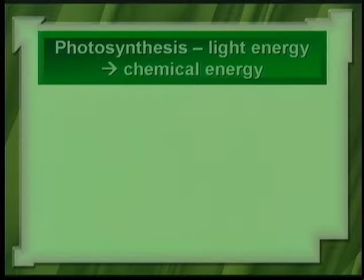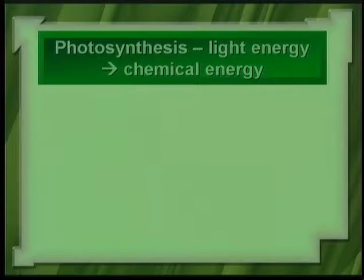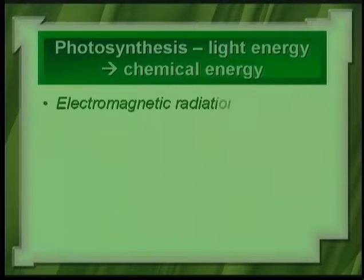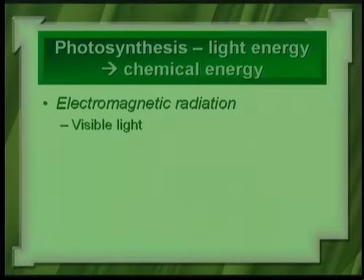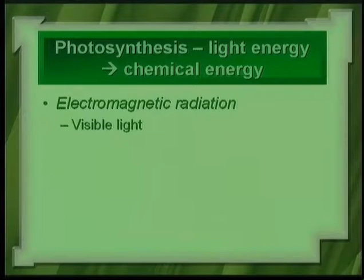So photosynthesis — what is photosynthesis? It happens in green plants, algae, and blue-green bacteria when light energy from the sun — solar energy — is converted into chemical energy. From the sun you have electromagnetic radiation, from very long wavelengths to very short wavelengths, from very low energy to high energy. Within this electromagnetic spectrum, we have the visible light spectrum because plants absorb light within the visible light spectrum.